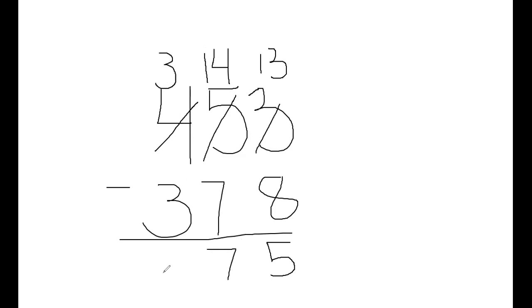Now fourteen minus seven equals seven, and three minus three is zero, so I'm just gonna leave that blank. So my answer would be seventy-five. Okay, hopefully this little review will help you to know when you need to borrow. Anytime that the number on top is smaller than the number that you're subtracting, you have to regroup before you can subtract. Good luck.